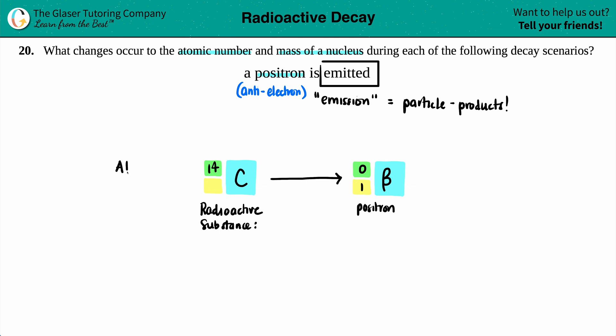The top numbers are always your atomic mass, so we'll be seeing what happens to that. And then the bottom numbers are always your atomic number, which are your number of protons. Now the atomic number for carbon is always going to be six, which can be found on the periodic table.